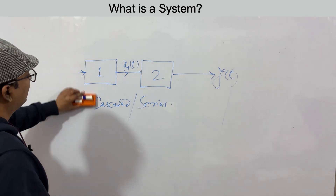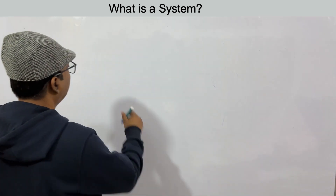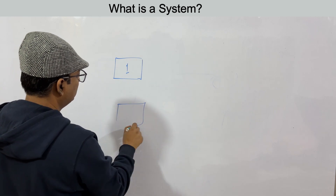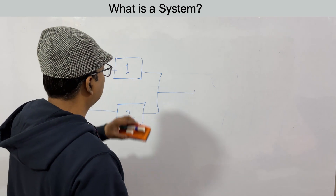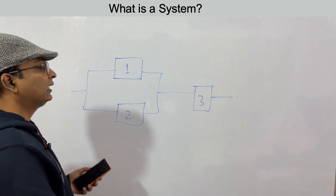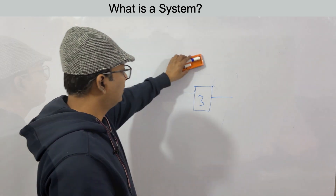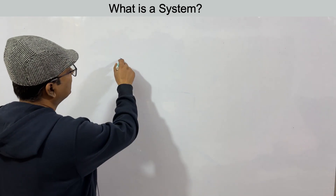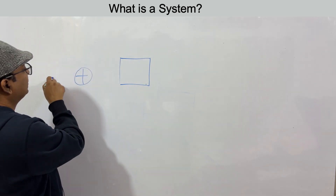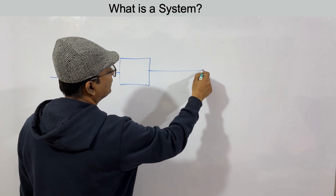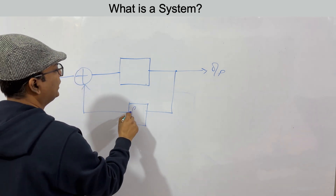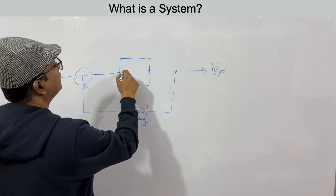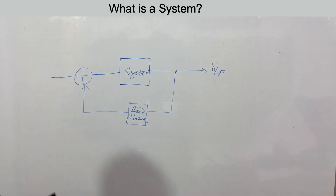Systems can also be connected in parallel, or in a combination of parallel and series. We can also have feedback systems, where the output is fed back and interconnected with the input through a feedback network. These are the different possibilities of system interconnection.